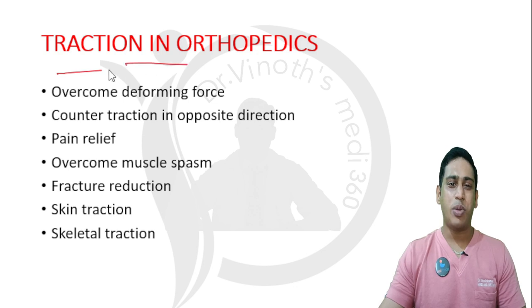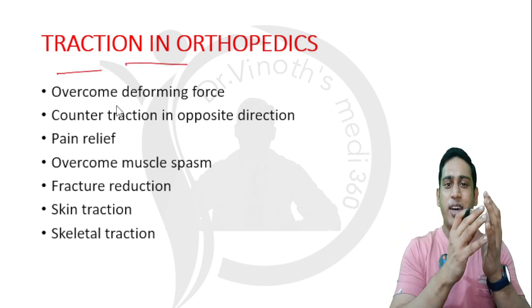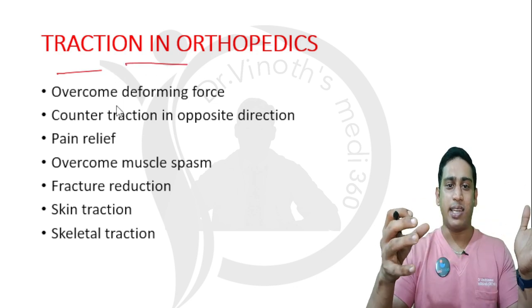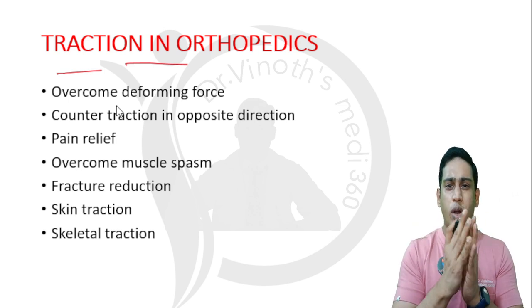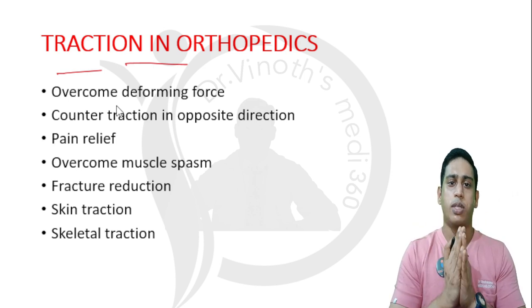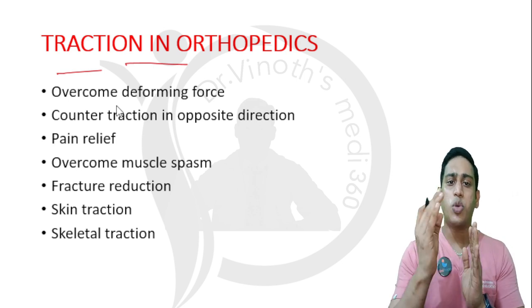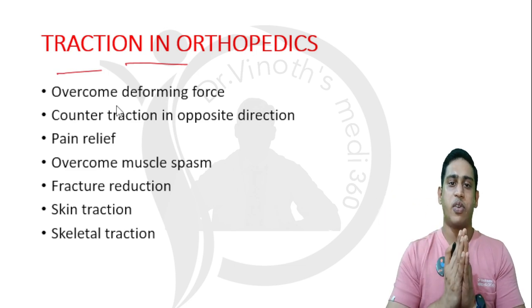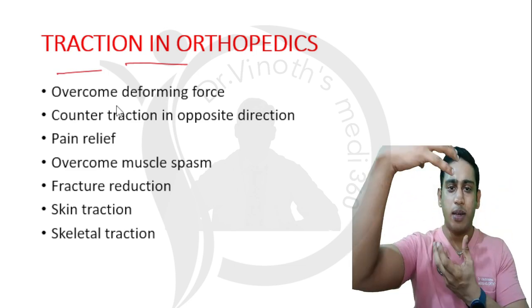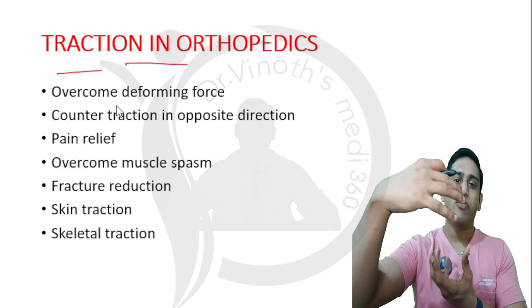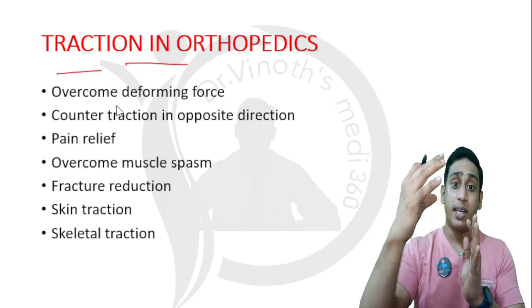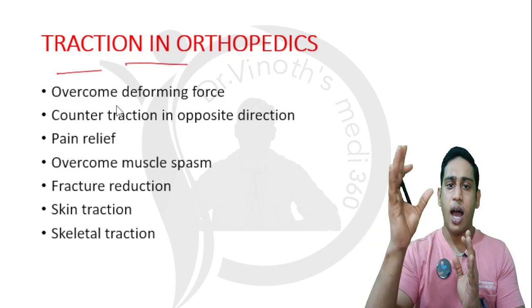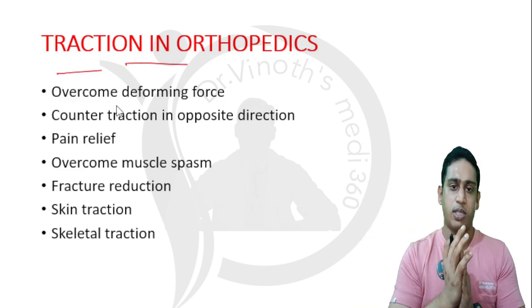What is meant by traction? Traction, as a literal meaning, we are stretching a limb. See, assume that whenever there is an injury, which means a fracture at the limb, one part of the bone will be acting under the influence of an agonistic muscle.